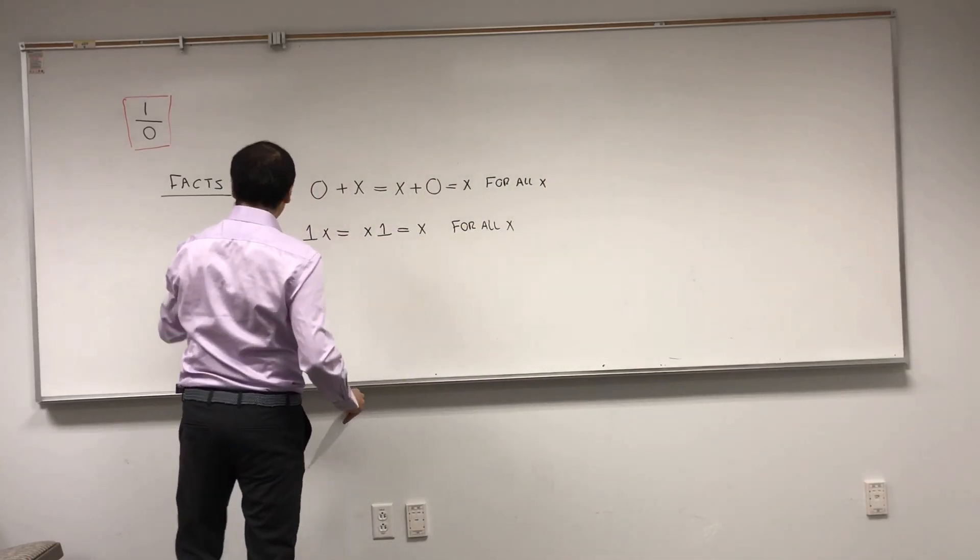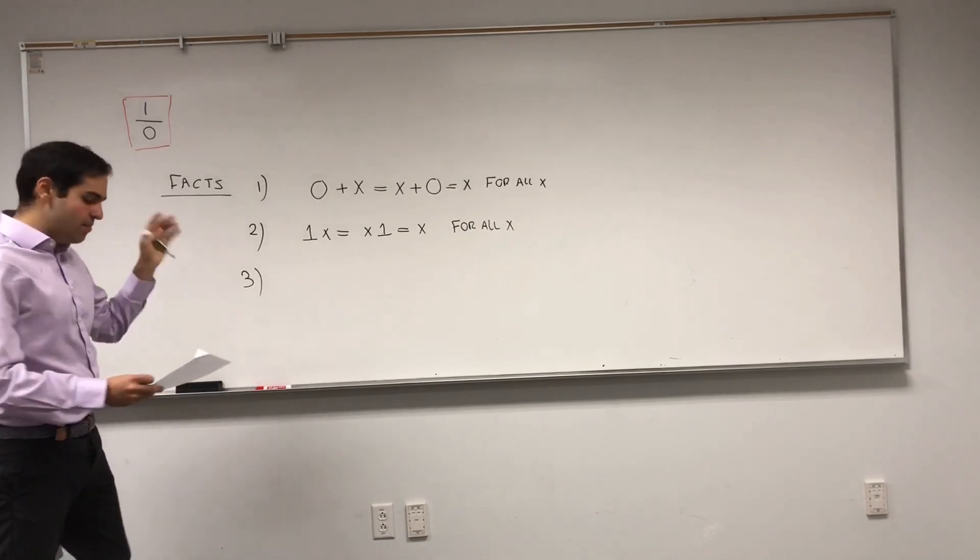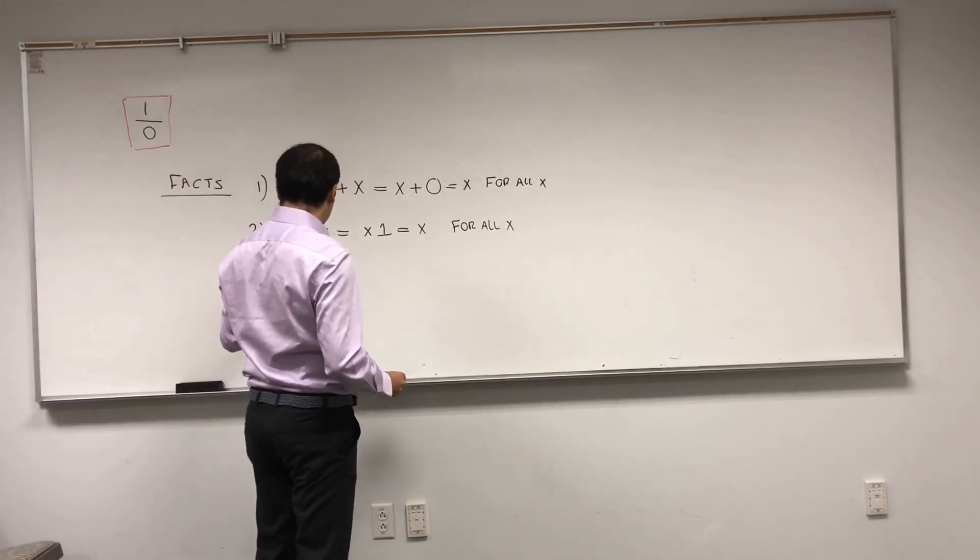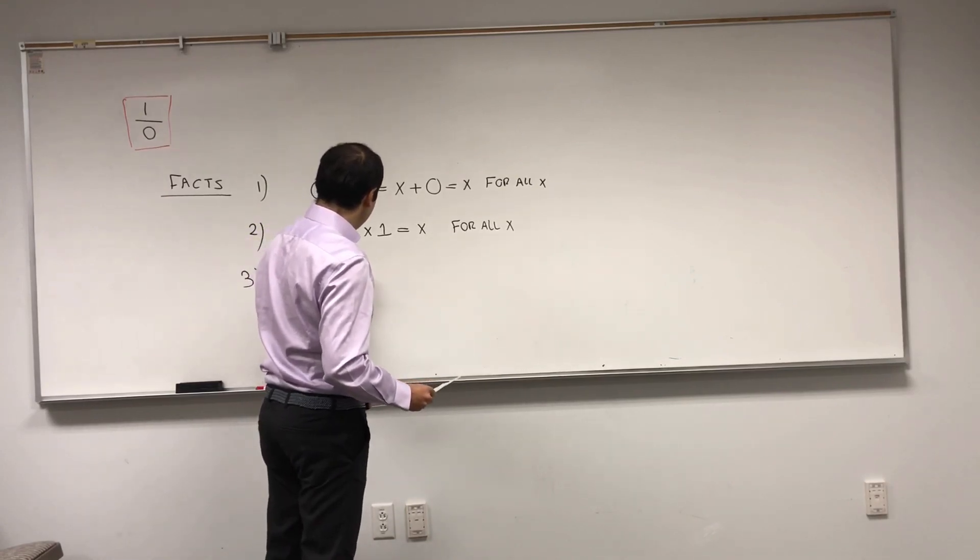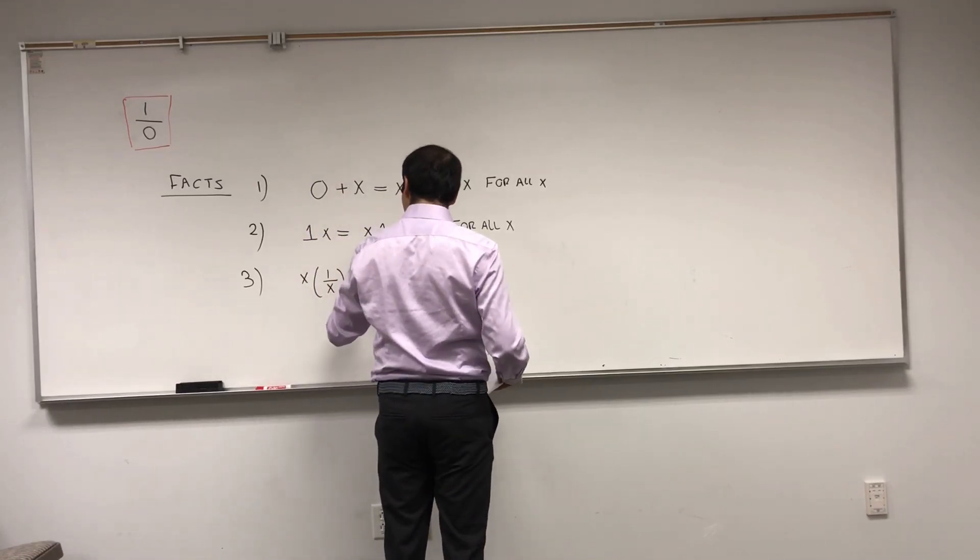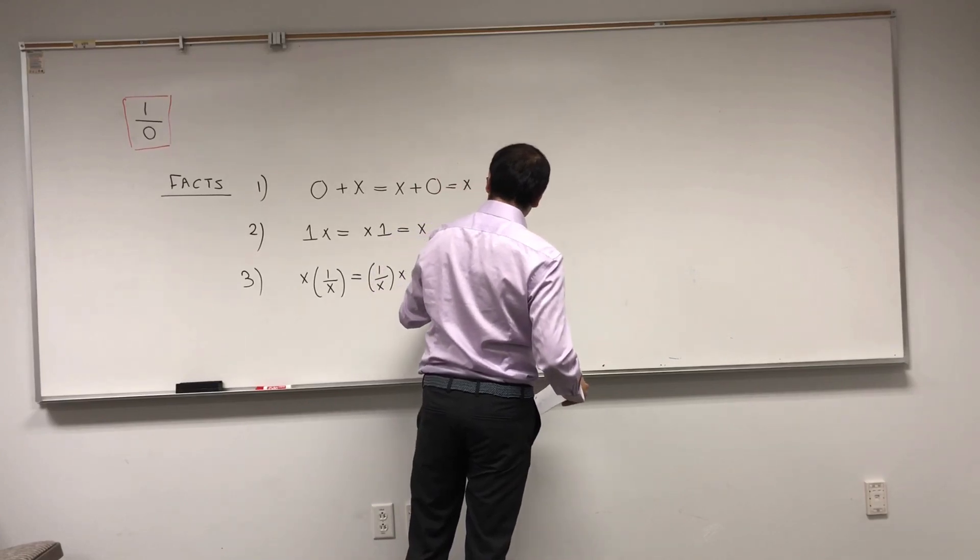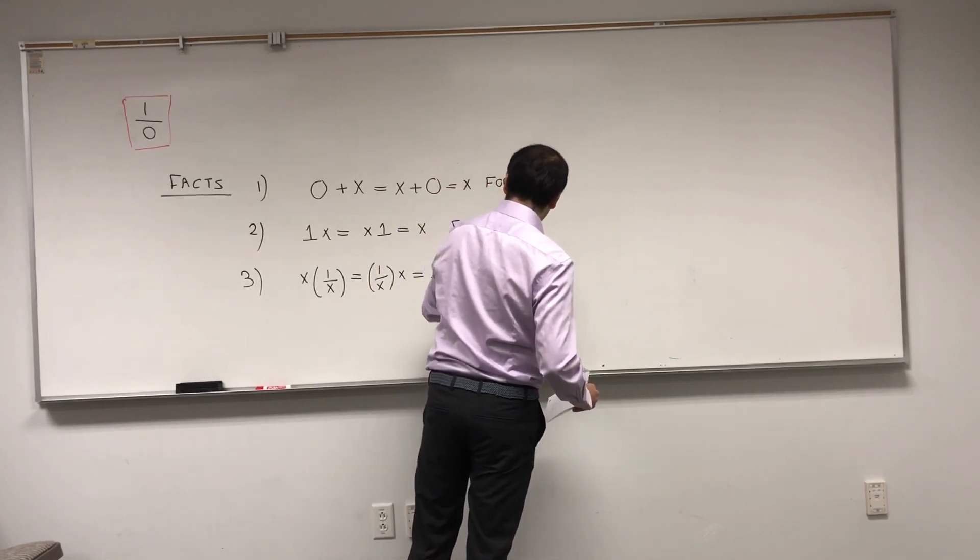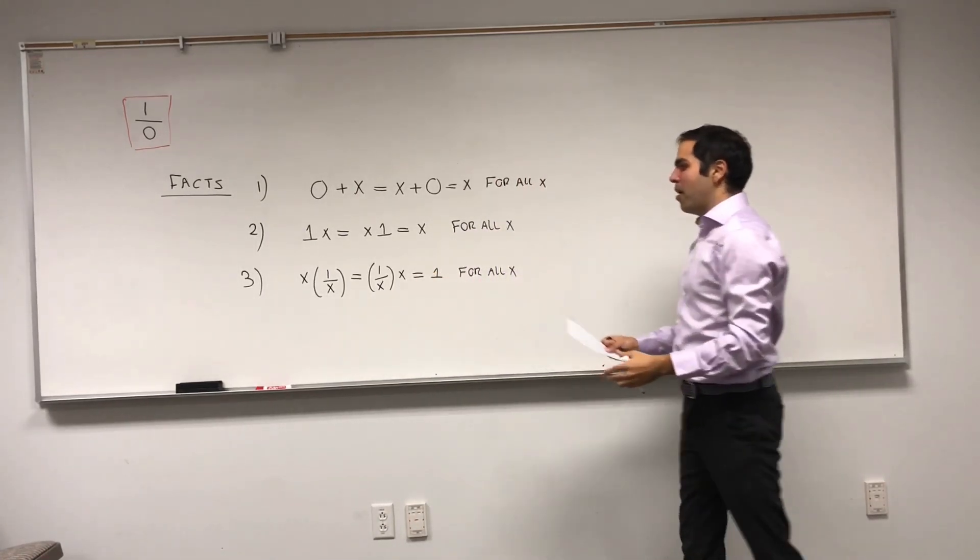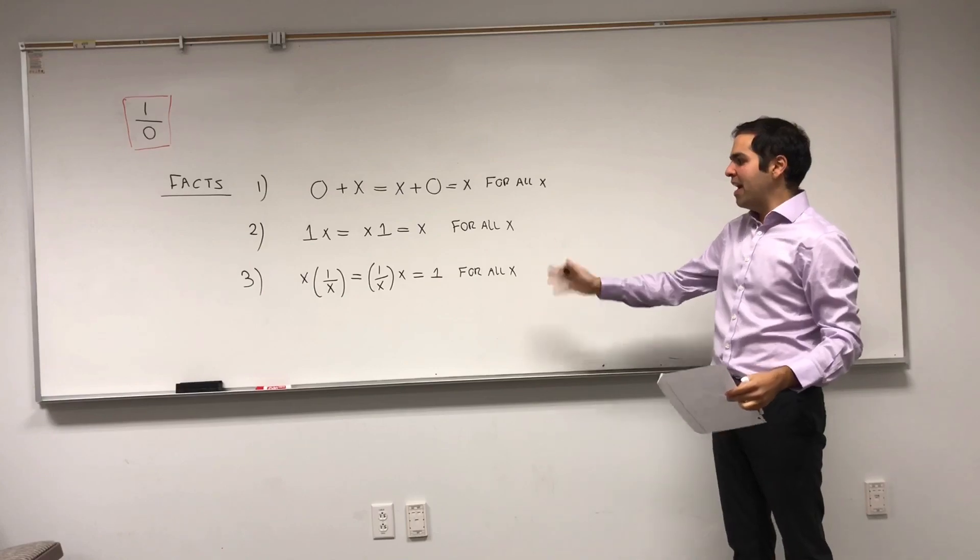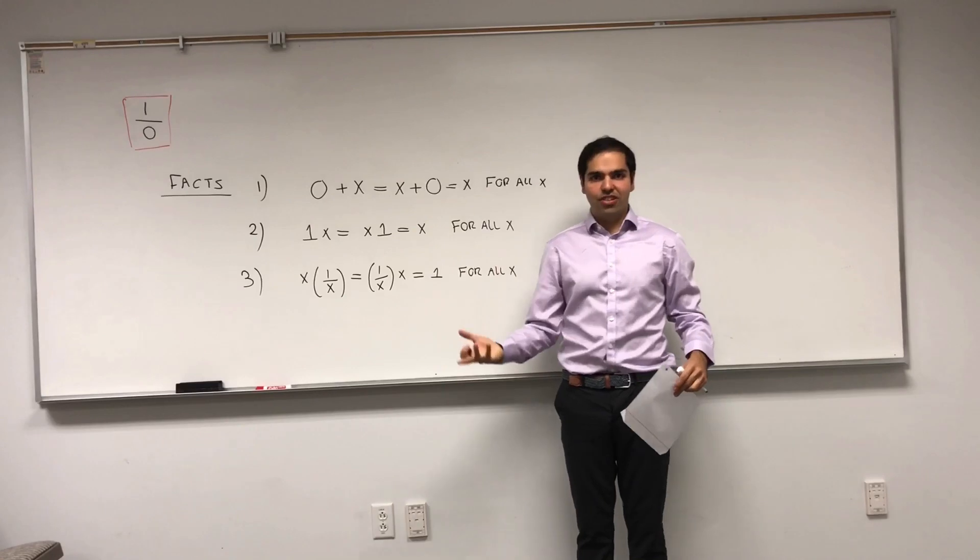And, lastly, since we'll be talking about 1 over 0, what does 1 over x mean? It means that it's the number such that if you multiply by x, so x times 1 over x equals 1 over x times x equals 1 for all x. So, if 1 over x exists, then it has the property that if you multiply by x, it equals 1. And, that is the definition of the inverse.